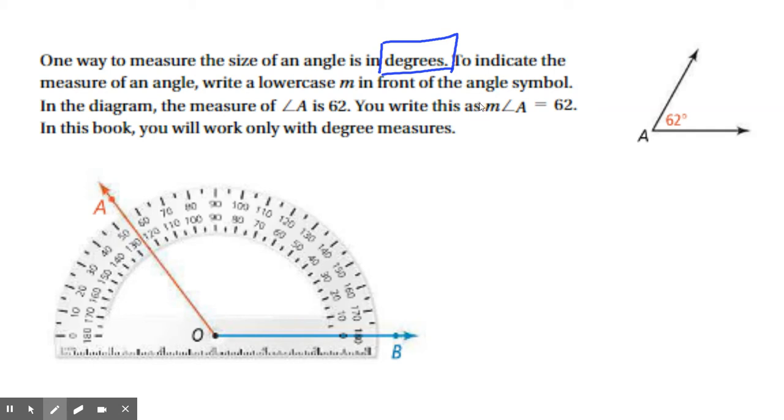Now, to write that in symbolic form, we would write just like this. The measure of angle A equals 62. And I'm going to throw the degree symbol there. I would ask that you use degrees when you write it.